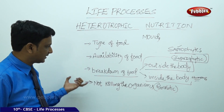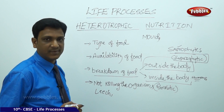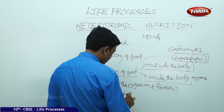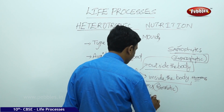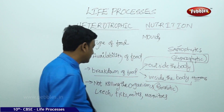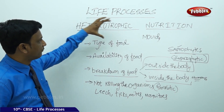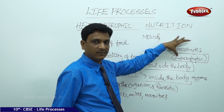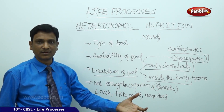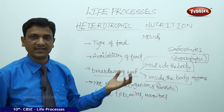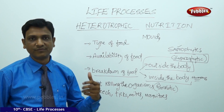Among parasitic animals, examples include leeches, which feed on the blood of animals without killing them, as well as ticks, mites, and mosquitoes. These are all examples of parasitic organisms. To summarize the heterotrophic modes of nutrition: saprophytic nutrition involves organisms dependent on decaying matter, and parasitic nutrition involves organisms that do not kill but live on and obtain materials from the host organism. Now let us look at heterotrophic nutrition in humans.